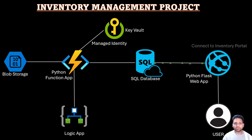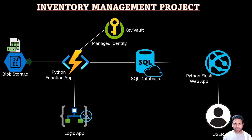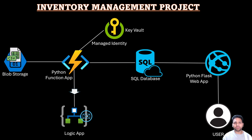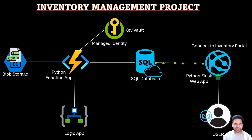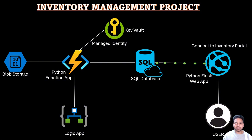For security reasons, we don't want to use the SQL database credentials directly in the Function App. For that reason, we will be creating an Azure Key Vault, where the integration of the Function App with the Key Vault will be through a managed identity. The system-assigned managed identity of the Function App will have role-based access control over the Key Vault secrets, and the SQL database credentials will be saved as secrets in the Key Vault.